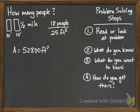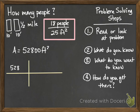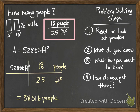Now we apply the density as a unit conversion. We start with our area of 52,800 feet squared and multiply by 18 people per 25 feet squared, so feet squared cancels. That gives us 52,800 times 18 divided by 25, which equals 38,016 people. That seems like a lot, but for half a mile long and 10 feet wide on both sides it's fairly realistic.